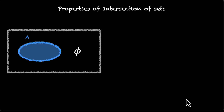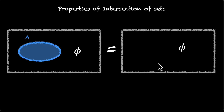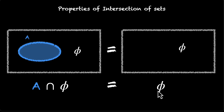We have A and we have phi. If we try to find the intersection of A and phi, we're looking for what's common between set A and nothing. There's nothing in common between these two, so we end up with nothing. This means A intersection phi is the same as phi. This is called the law of identity element phi.